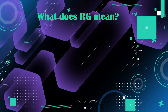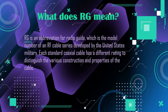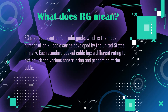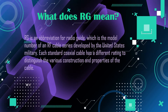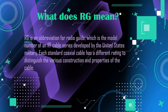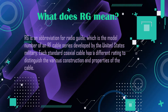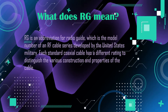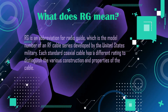What does RG mean? RG is an abbreviation for radio guide, which is the model number of an RF cable series developed by the United States military. Each standard coaxial cable has a different rating to distinguish the various construction and properties of the cable.